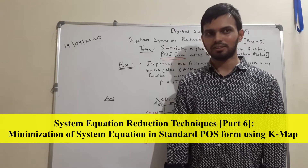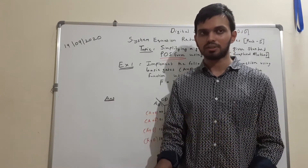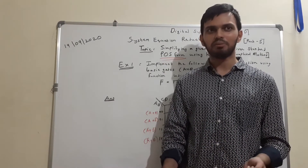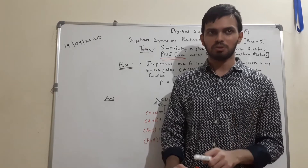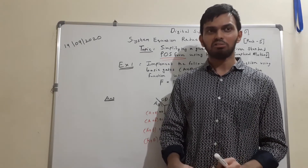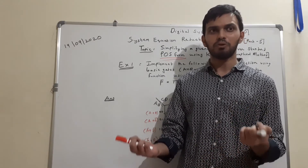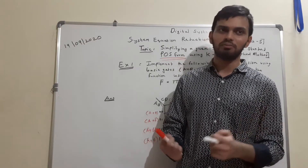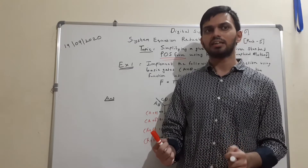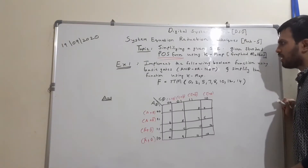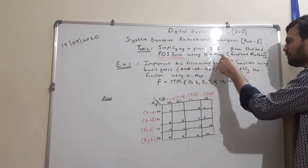Welcome to my channel Engineering Made Simple. We are studying the KMAP method for simplification of Boolean equations. In the previous part, we studied how to simplify an expression using KMAP when given in standard SOP form. In this part, we will study how to simplify a given system equation using the KMAP technique when it is given in standard POS form — that is, when max terms are given for the expression.